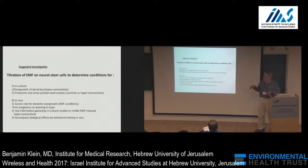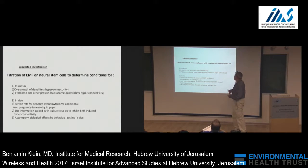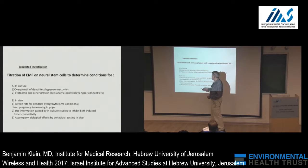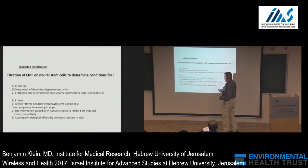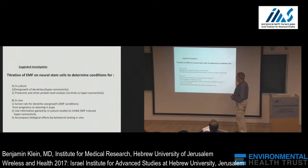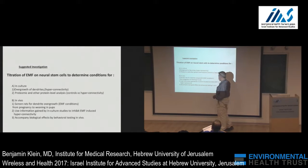What should be done is the following: titrate EMF on neural stem cells to determine conditions for overgrowth of dendrites, giving us hyper-connectivity — first in culture, in neurons or neural stem cells. If we succeed in finding those conditions, do proteomics comparing against controls. Then in vivo, screen rat dendrite overgrowth under different EMF conditions, using information from culture studies to find a way to inhibit overgrowth under the same conditions that cause it.